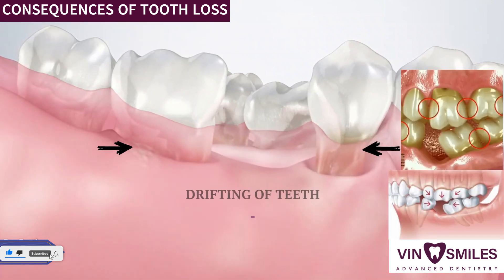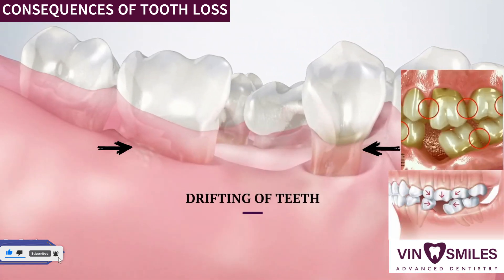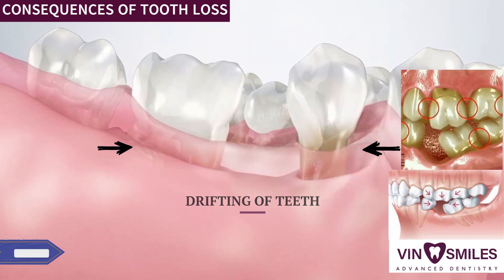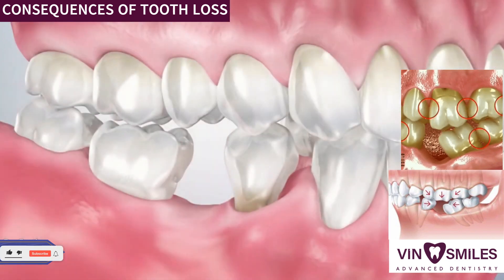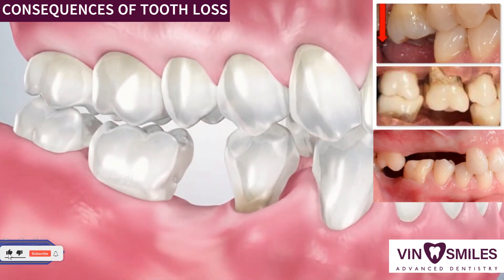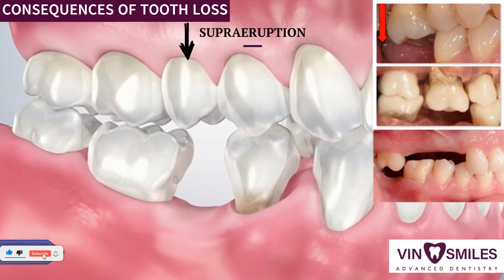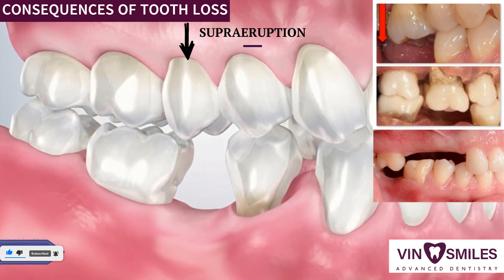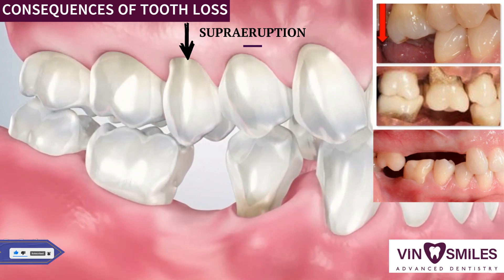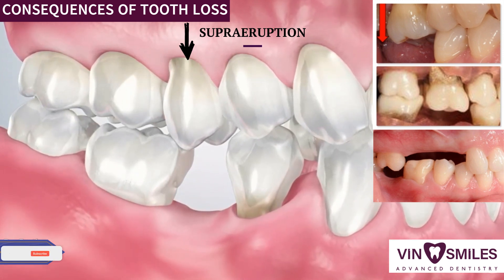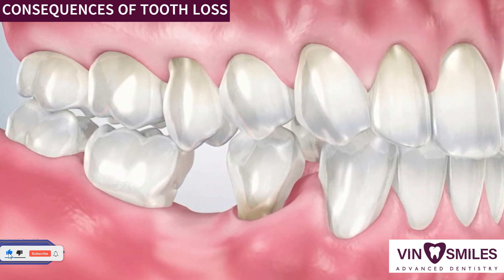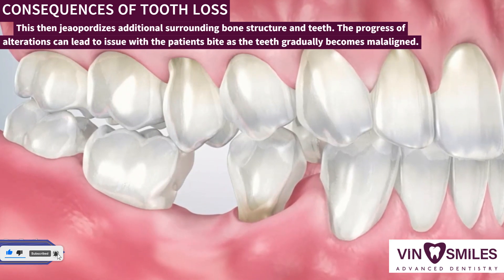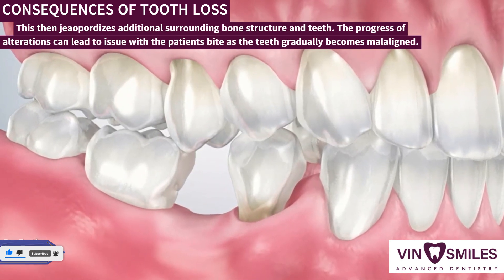These changes can spread to the neighbouring teeth, resulting in loss of bone support and the teeth drifting into the vacated space. Additionally, the tooth opposing the empty space begins to ascend or descend into the space in a process called supra-eruption, which then jeopardizes additional surrounding bone structure and teeth.